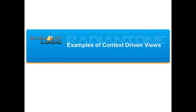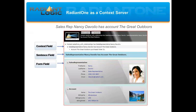The last thing I want to cover today is an example of an application that can consume context-driven views delivered by Radiant One. The sample application included with our product is called Context Browser. The Context Browser is a sample application that showcases the ability of Radiant One to gather, organize, and represent the different business context that exist within the data, giving you an idea about how applications can consume it. From within Context Browser, you can search for a keyword and the result will be a set of sentences describing the context around that keyword. The context-driven view used in the example shown here is based on an HR database, a CRM database, and an orders database.